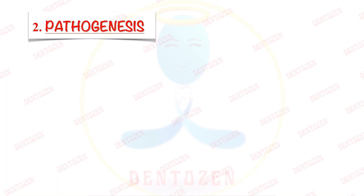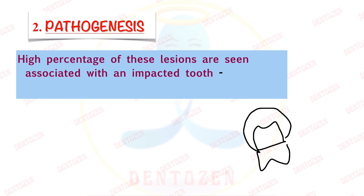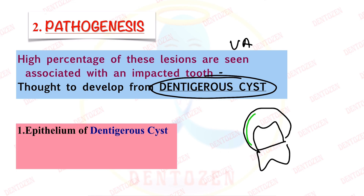Let's see the pathogenesis. In most cases, it occurs in association with an impacted tooth. This location is similar to a dentigerous cyst, which we know always occurs in association with an impacted tooth. So does that mean the Ameloblastoma is arising from a dentigerous cyst? Yes — that is the first pathogenesis: the flat epithelial lining of the dentigerous cyst undergoes neoplastic transformation, converting into a tumor-like lining with tumor cells, leading to formation of Unicystic Ameloblastoma.